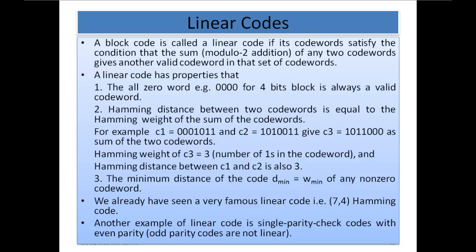There are three important properties of a linear code. The first one is that the all-zero word — for example, 0 0 0 0 for a 4-bit block code — is always a valid codeword. This means all zeros will always be a valid codeword in the set of codewords.